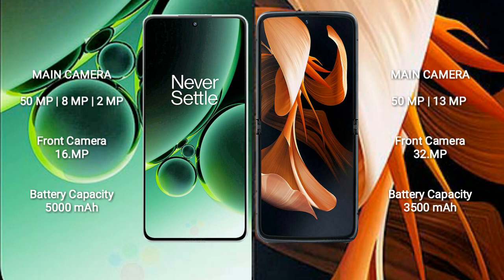OnePlus Nord 3 has a 5000mAh battery with 80W fast charging support. Motorola Razr has a 3500mAh battery with 30W fast charging support.